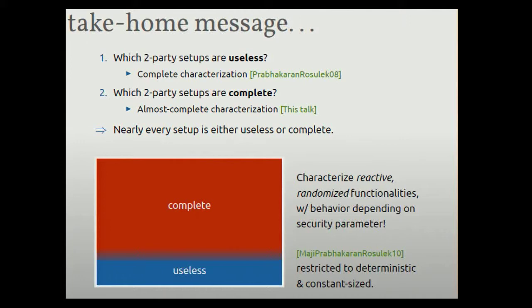So I'll just put that in contrast to some previous work that drew a qualitatively similar picture, but the techniques were restricted to a very small class of functionalities, namely deterministic and constant size. So in the UC model, we can talk about lots more functionalities than just deterministic, constant size functionalities. So that's the technical increment.